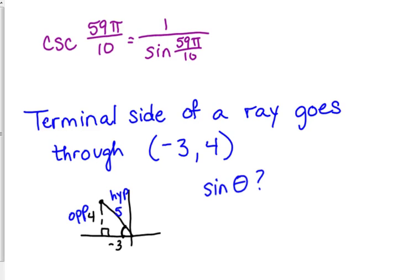Or in this case, 3, 4, 5 triangle. So the sine, in this case, would be 4 over 5. Cosine would be negative 3 over 5. Tangent would be negative 4 over 3. Remember, we don't leave negatives in the denominator.